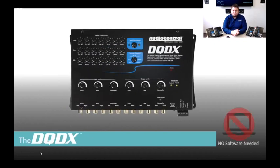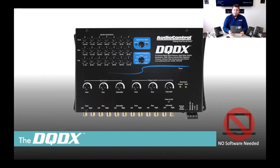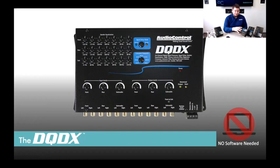Moving on to the actual products, we'll start with the DQDX. This is a six-channel input, six-channel output DSP — low level in, low level out — so it's typically used for aftermarket head unit applications. Everything AudioControl makes is in a nice metal casing; none of it's plastic. It's really well built. The DQDX is great for the guy who already has an aftermarket system that sounds pretty good but is missing that little bit of something.